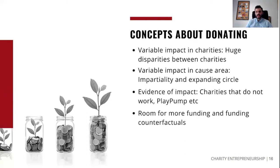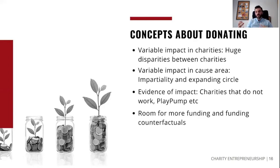Another consideration is the idea of counterfactuals — basically, what would have happened otherwise. For example, you might be speaking to a really fantastic charity, but if you know that if you don't give it funding, it will get funding from the Gates Foundation anyway, then your funding has a very different impact. Thinking about counterfactuals is a very unique thing to the effective altruism movement. It's not commonly thought about in the charity sector, but it can really change the impact estimate of where you put your resources.